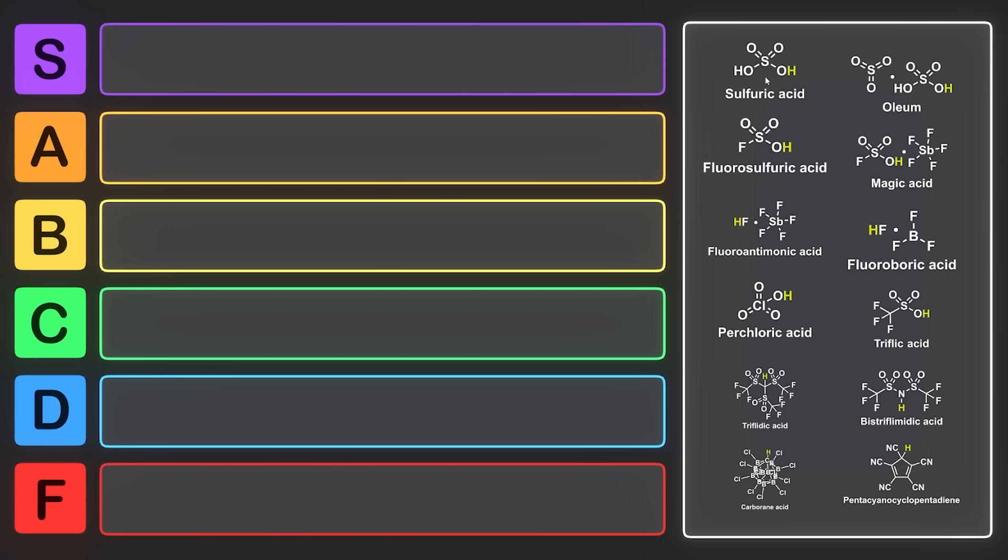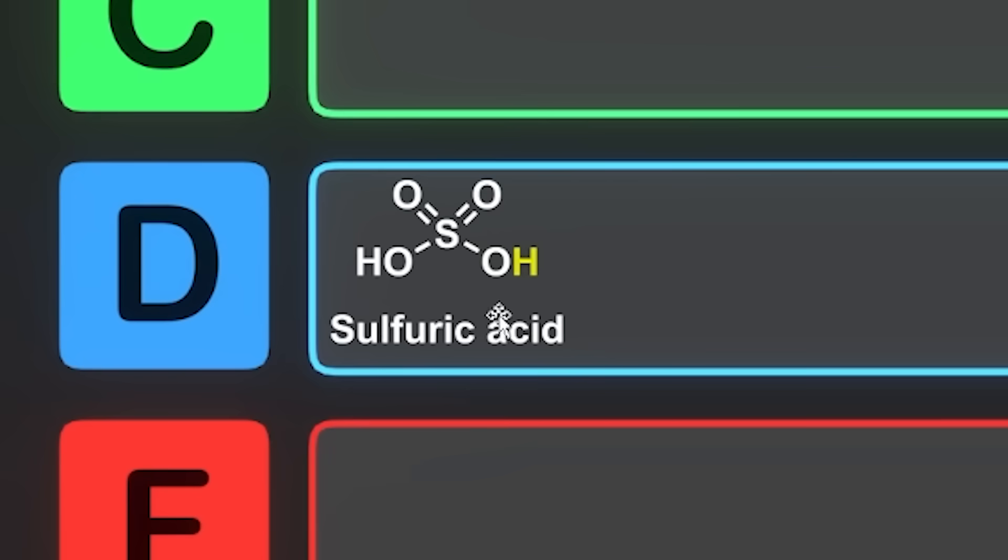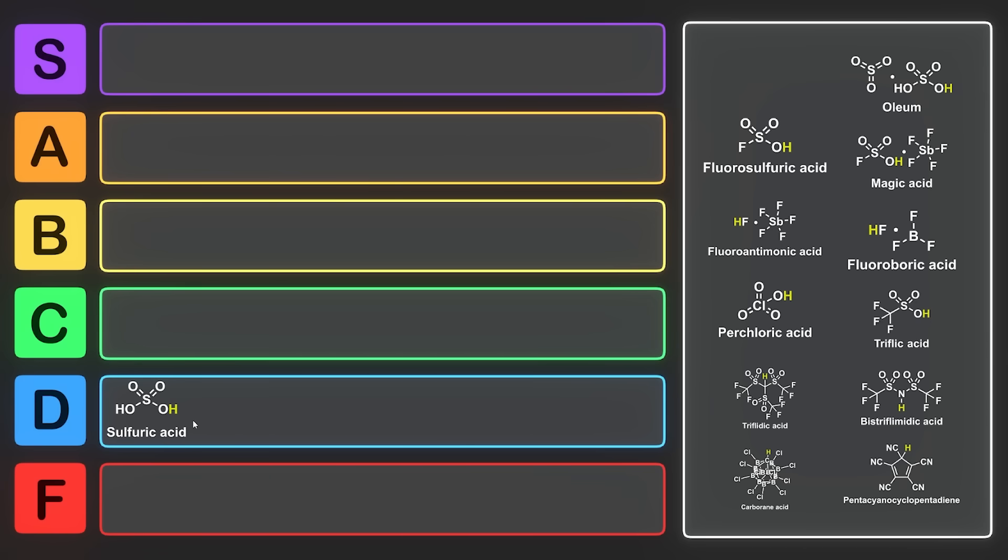You can use sulfuric acid in tons of reactions in organic chemistry, but because it's not a very strong superacid, I think we're going to have to be a little bit more harsh. Sulfuric acid, you can go right into D tier. The one nice thing about sulfuric acid is it's a liquid you can handle, and it's very easy to make and get available. However, overall, it's just not that strong of an acid compared to some of the ones on this list.